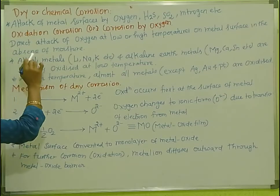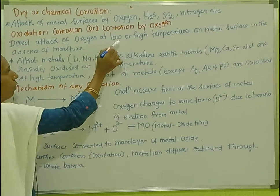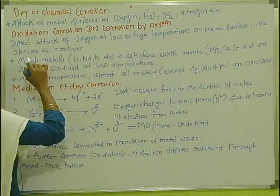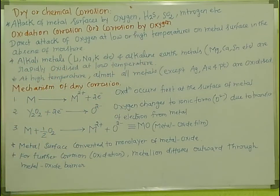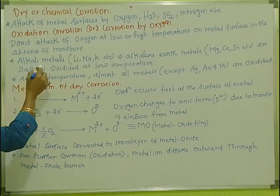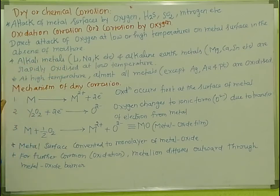Oxidation corrosion is the first type of dry corrosion. This involves the direct attack of oxygen at low or high temperatures on the metal surface in the absence of moisture. So oxygen directly attacks the metal surface — low temperature or high temperature — in the absence of moisture.